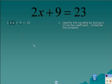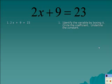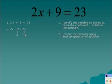Finally, we're going to underline the constant. This should give us a good understanding of what our problem will look like. The next step is to remove the constant using inverse operation of addition. You see here that the inverse of addition is subtraction. Subtract 9 from both sides, and you should get 2x equals 14.